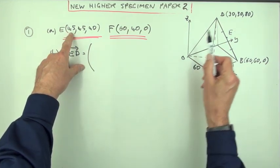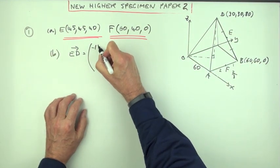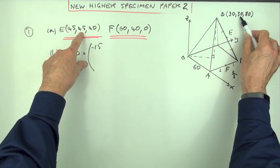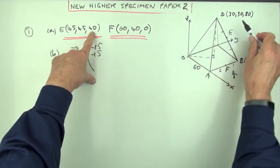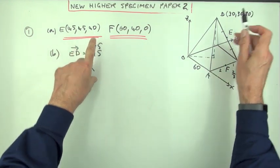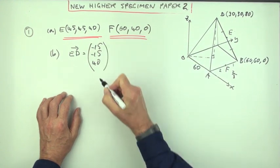How do you get from E to D? How do you get from 45 to 30? You go back 15. How do you get from 45 to 30 for the Y components? You go back 15. How do you get from 40 to 80 for the Z components? That's forward 40.